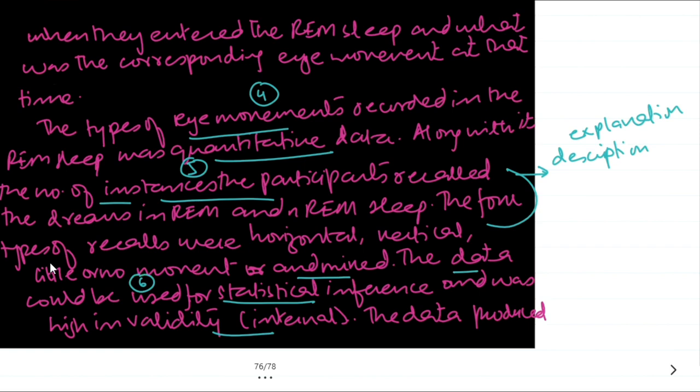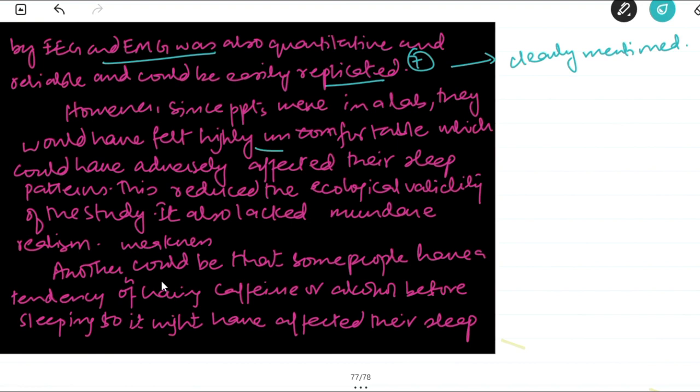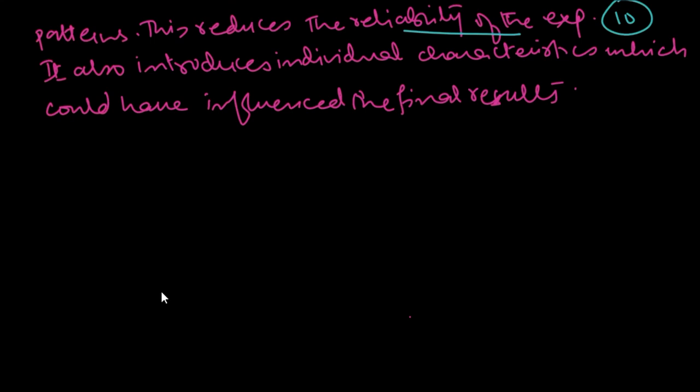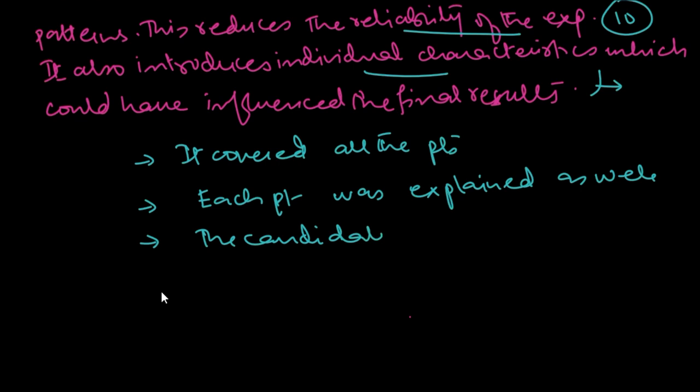Then explanation is also linked with the study. Remember fellows, just don't write that it is or it isn't linked. It should be linked with the study. Then we have statistical inference. What we can do further? Another clearly mentioned: replicated, uncomfortable. Then the explanation why it would have been uncomfortable. Nine points. Ten, the reliability of the experiment and individual characteristics. This is an example of a perfect answer. The examiner would say that it covered all the points. Each point was explained as well and linked. The candidate didn't miss the specific details. The specific details of each study are really important.